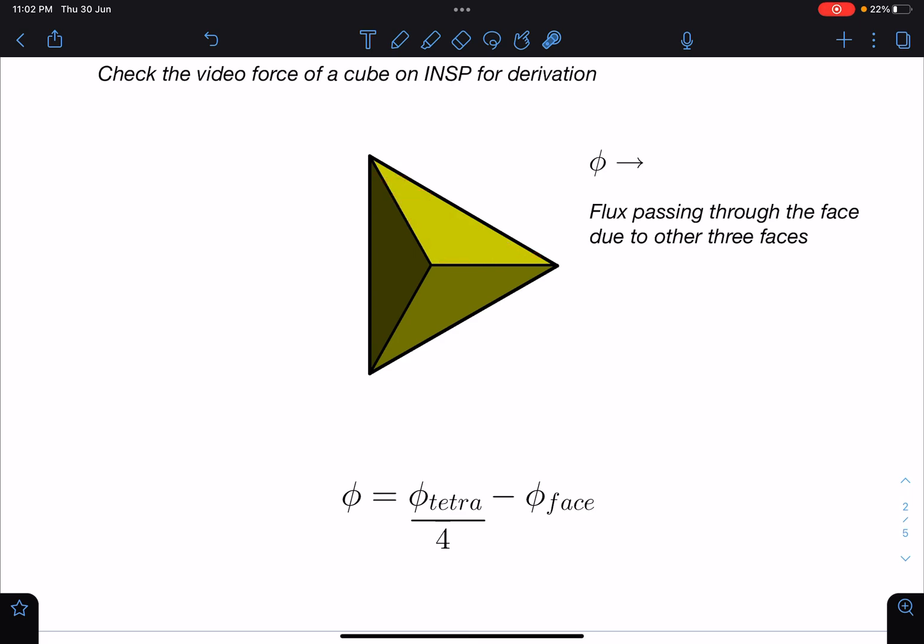So this part minus if I remove the face of flux due to this part which is going in this half outside, so that will be the flux passing through this surface due to remaining 3. I hope it is clear to you.